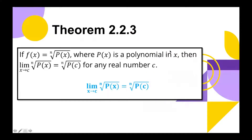Another way of solving the limit of a radical function is by using Theorem 2.2.3. It states that if f(x) = ⁿ√(p(x)), where p(x) is a polynomial in x, then the limit of ⁿ√(p(x)) as x approaches c is equal to ⁿ√(p(c)) for any real number c.